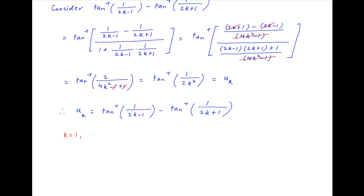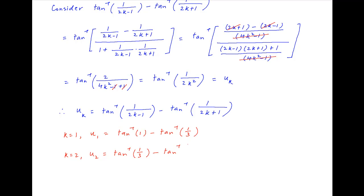Put k equal to 1. The first term u1 can be written as tan inverse 1 minus tan inverse 1 upon 3. Similarly, put k equal to 2. The second term u2 can be written as tan inverse 1 upon 3 minus tan inverse 1 upon 5.